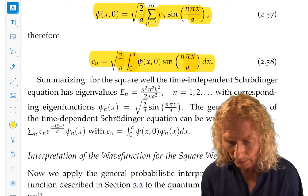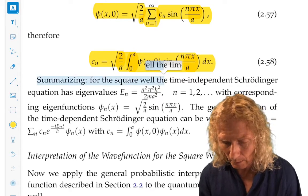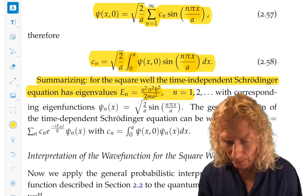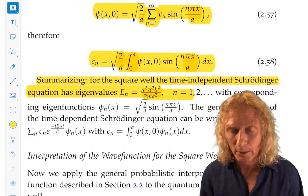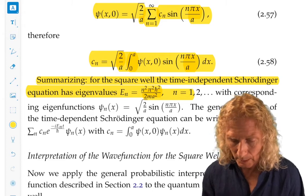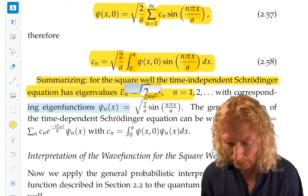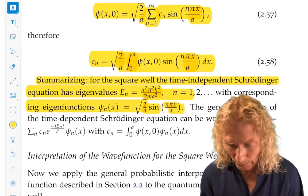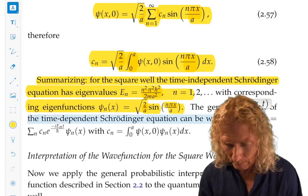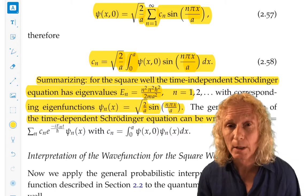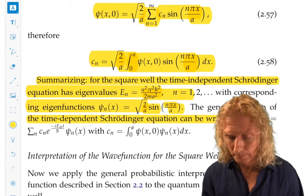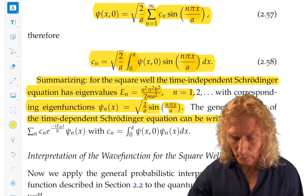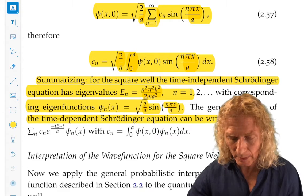And the important thing to realize, summarizing, is that for the square well, we have these eigenvalues, discrete eigenvalues, greater than zero strictly, with corresponding eigenfunctions in this form. The general solution of the time-dependent Schrödinger equation can be written in this form. Alright.